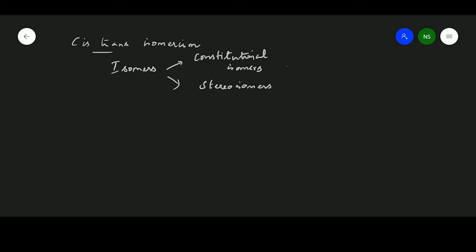I'll first discuss constitutional isomers. I'll take an example so I can explain easily. C2H6O. This is a molecular formula which is applicable for two different compounds. One is methoxymethane, another one is ethanol.